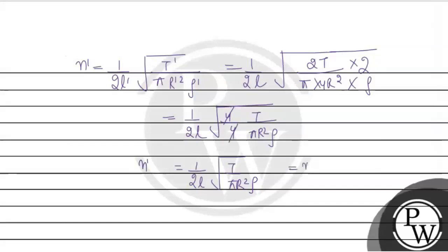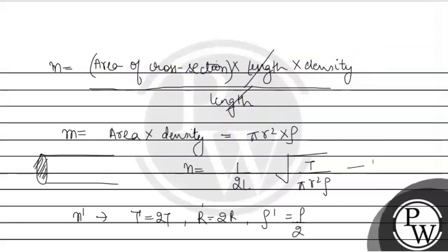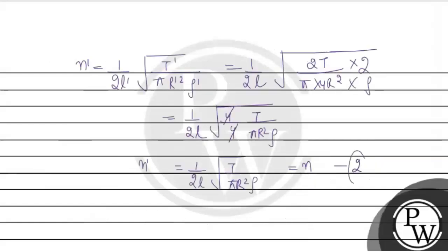Ur yahi value jo thi. Woh hamaari n thi. Jo hamne pehle equation number 1 mein calculate ki thi. And this is equation number 2. So, we have equation number 1 is equals to equation number 2. Therefore, it concludes that n prime is equals to n. This is your answer.